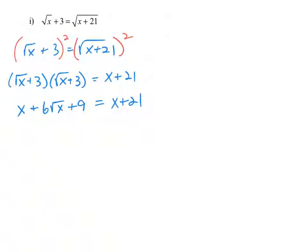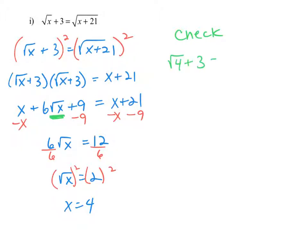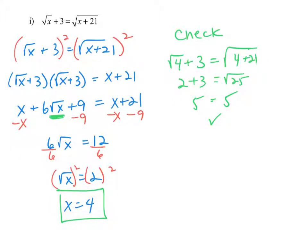We still have another radical, so we subtract x and subtract 9 from both sides to get 6 times the square root of x equals 12. Dividing both sides by 6 gives the square root of x equals 2, and squaring both sides gives x equals 4. Checking: the square root of 4 plus 3 equals 2 plus 3 equals 5 on the left. On the right, the square root of 4 plus 21 is the square root of 25, which also equals 5. So x equals 4 is the solution.